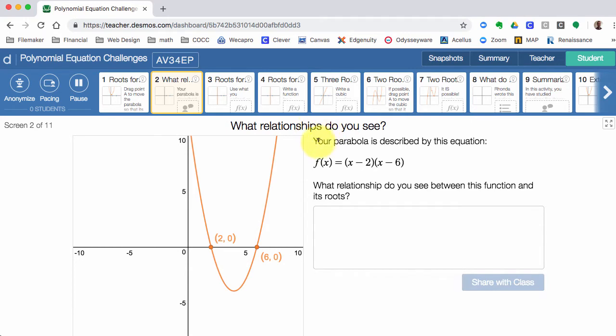What relationship do we see? Our parabola is described by this equation f(x) equals x minus 2 times x minus 6, because if I put 2 in or if I put 6 in I get 0 using the zero product property.